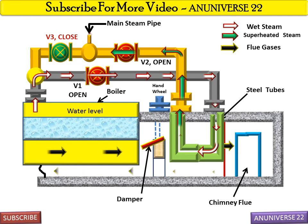The path of the flue gases is controlled by the damper, which is operated by the hand wheel. In brief, the main function of the superheater is to increase the temperature of steam above its saturation point. It is the accessory used in a boiler to increase efficiency by extracting heat from the flue gases. Today we learned about the working, components, and types of the superheater.